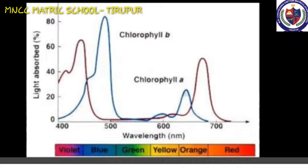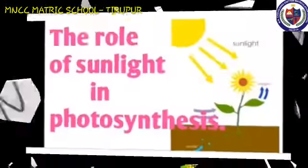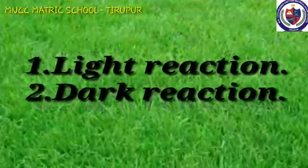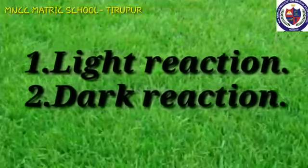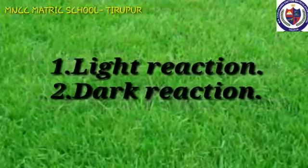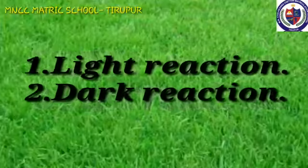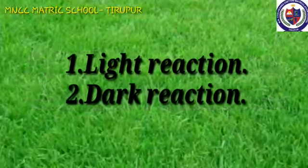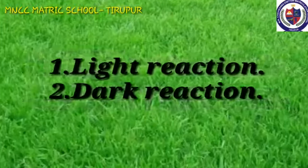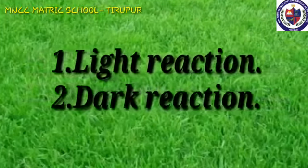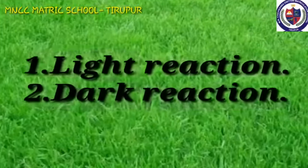The process of photosynthesis takes place inside the chloroplast. There are two stages in photosynthesis. First stage: light-dependent photosynthesis. Second stage: light-independent photosynthesis.